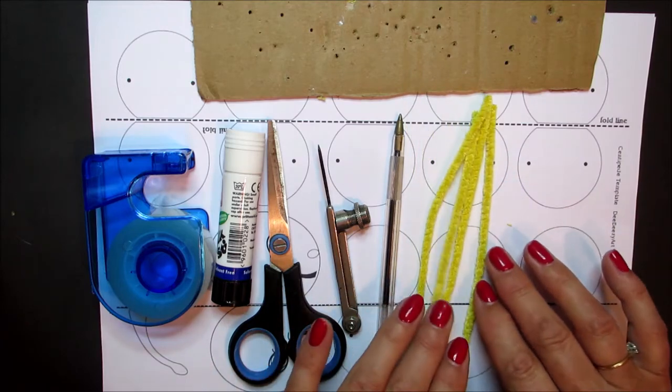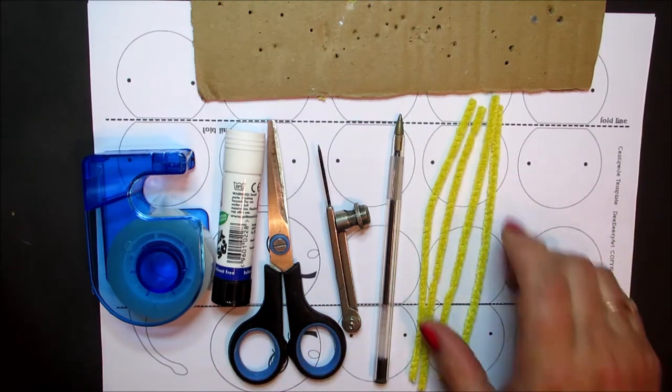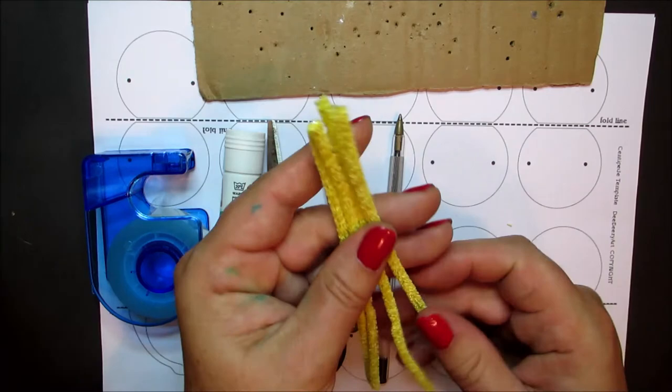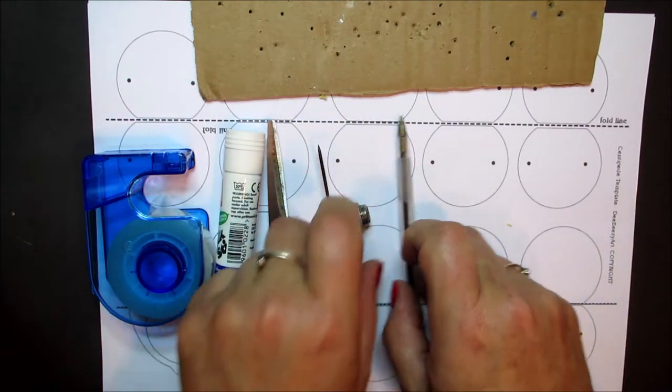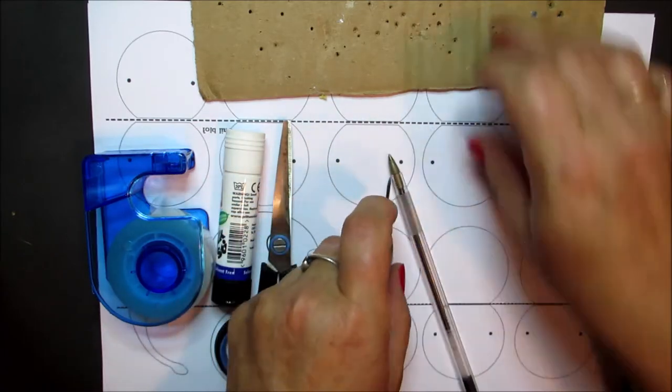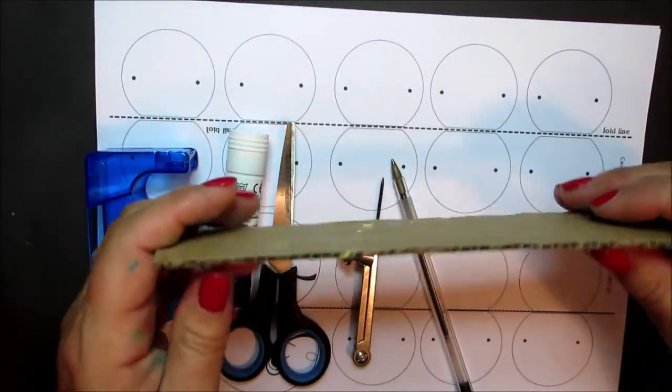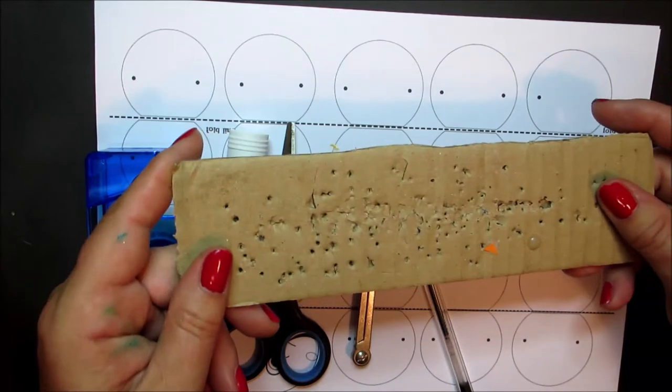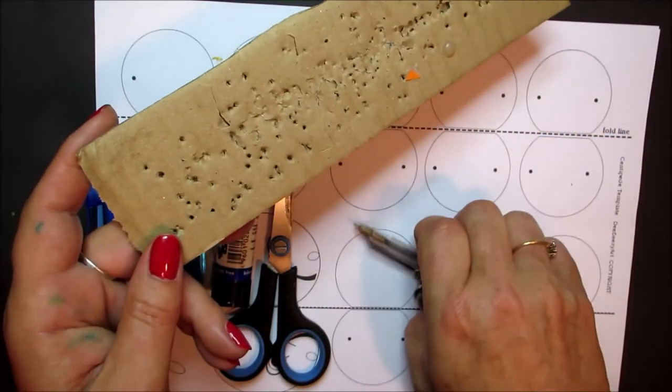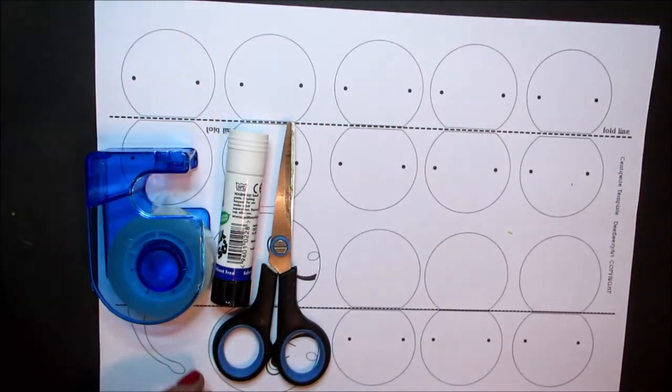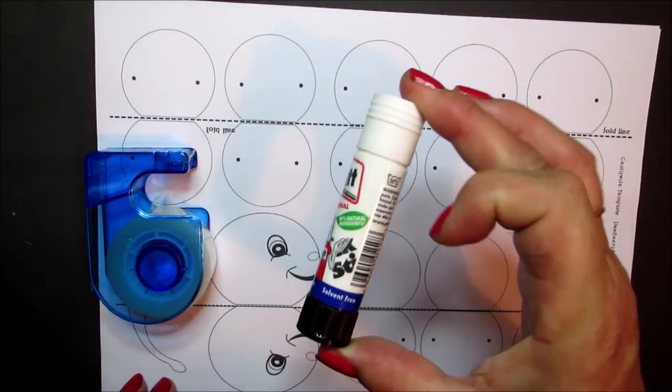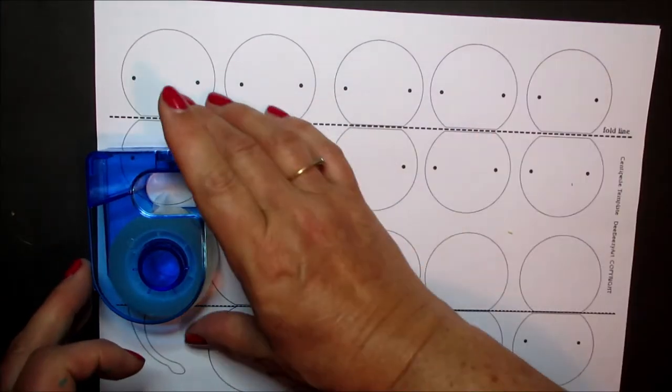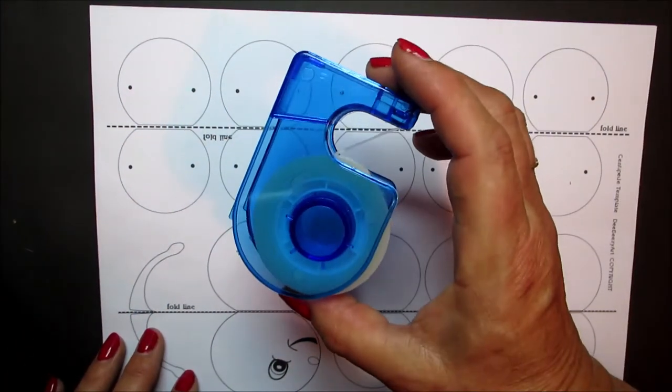Four 16cm pipe cleaners. A hard nibbed type pen or something sharp and a piece of corrugated card for punching holes. A pair of safety scissors, some Pritt stick type glue and a small amount of sticky tape.